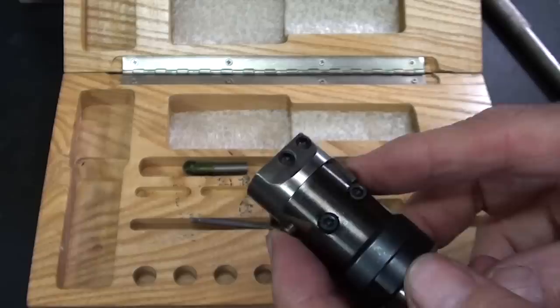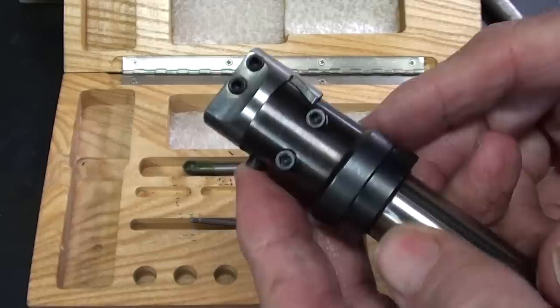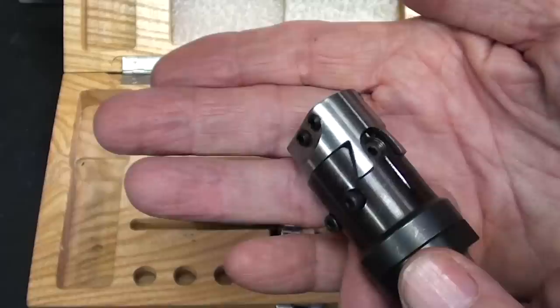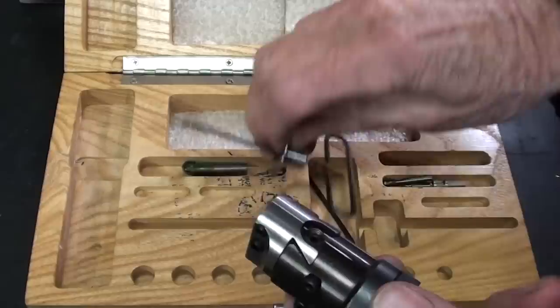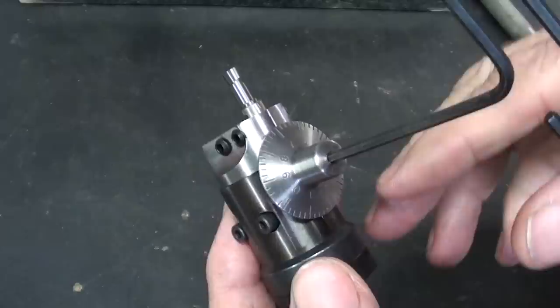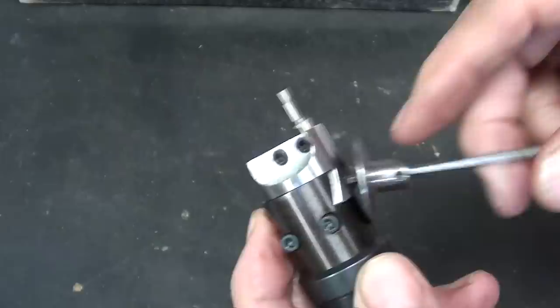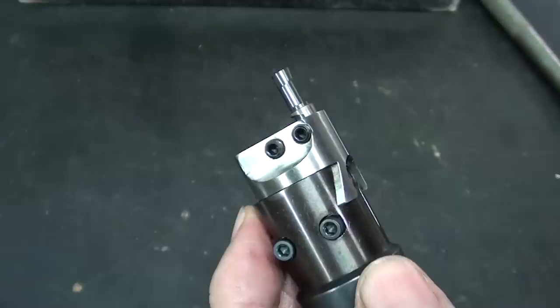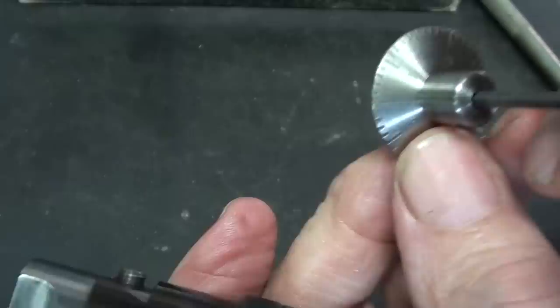Otherwise we would have to have a thread in here that had 100 threads per inch, which is non-existent and I believe impossible to make. So let me pull this screw out real quickly to show people, in case you haven't seen that other video. The point here is that when we turn the screw one full revolution, the boring bar, the cross slide here on the dovetail, is actually only moving ten thousandths. So each graduation on this little dial here is two-tenths of a thousand.